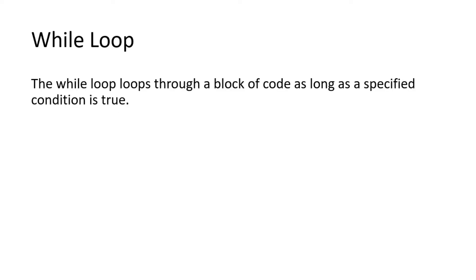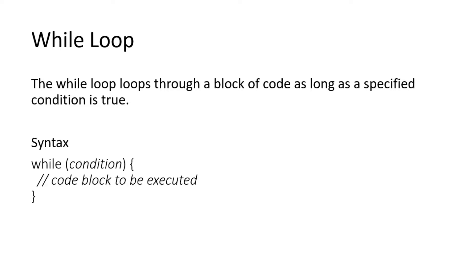While loop mein kya hota hai? While loop loops through a block of code as long as a specific condition is true. Toh jab tak condition humari true rehti hai, tab tak humara block execute hota rehta hai. Jaise ki humara syntax hai: while(condition), humara block of execution chalte rehta hai jab tak humari condition true rehti hai.